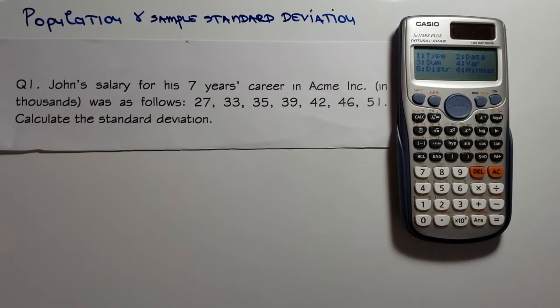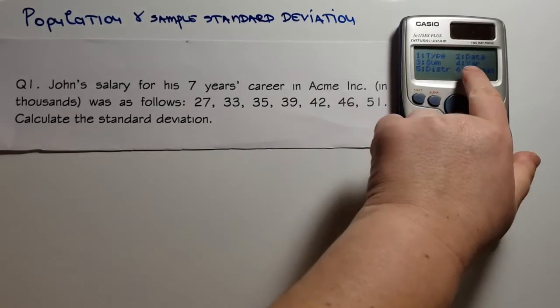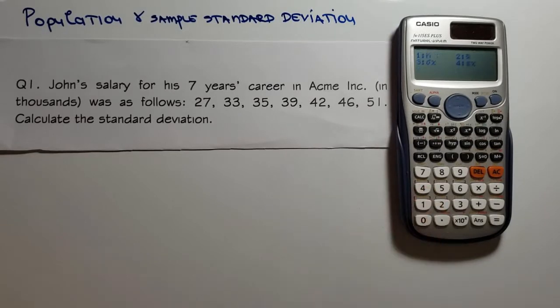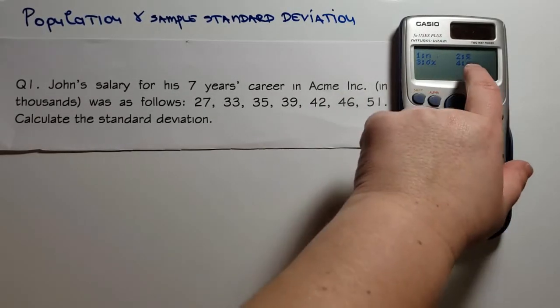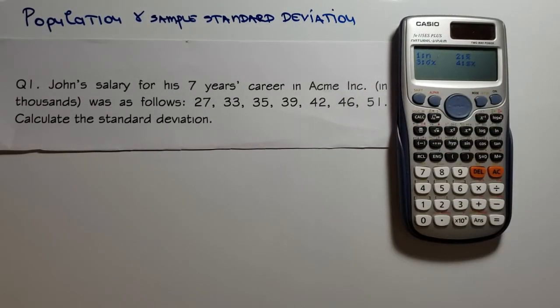Now we can see here we have a menu and since standard population is a type of variation, we go and choose four. And now we can see again here we have three for population standard deviation and we have four for sample standard deviation.